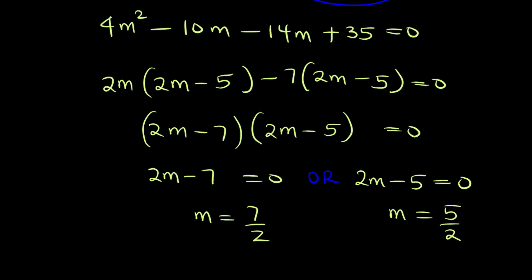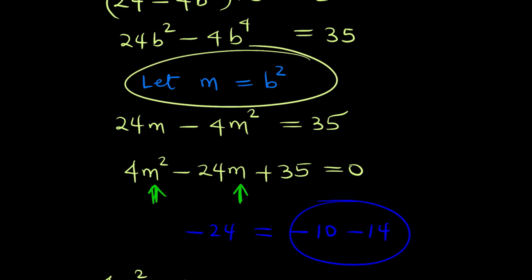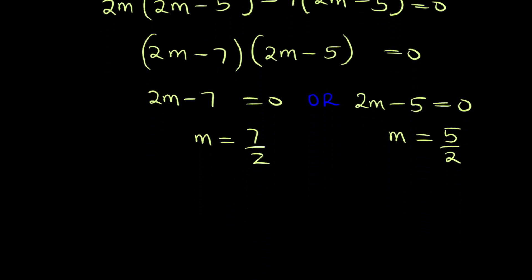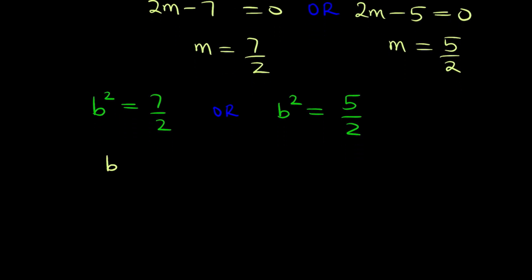We let m equal b squared, so we can now substitute back. From the first solution, b squared equals 7 over 2, or from the second, b squared equals 5 over 2. Solving for b: in the first case b equals the square root of 7 over 2, and in the second case b equals the square root of 5 over 2.